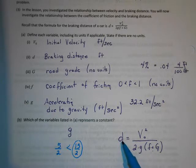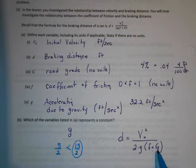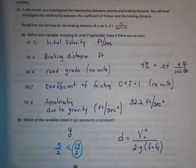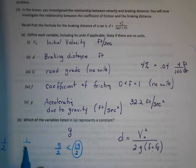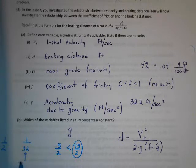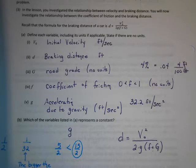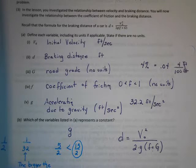Thinking about fractions: the bigger the numerator, the larger the fraction. For example, 15 over 2 is bigger than 5 over 2. So the bigger the velocity, the bigger the braking distance — the faster you're going when you hit the brakes, the longer it takes to stop. That's why velocity is in the numerator. Now, why are f and g in the denominator? The bigger the denominator, the smaller the fraction.